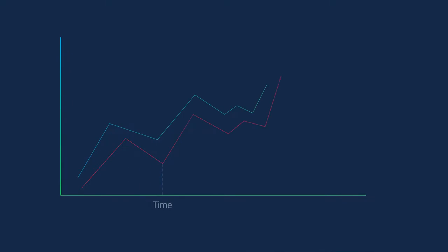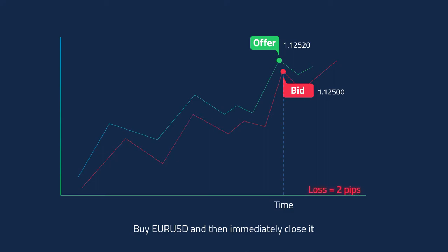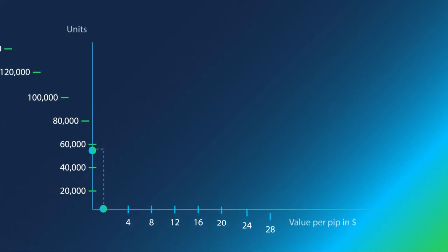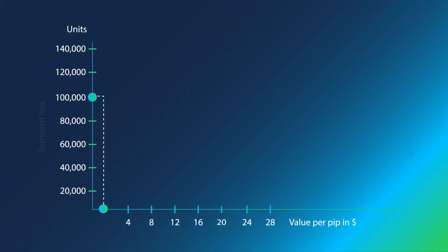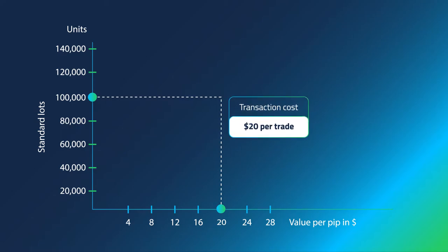In this example, if you were to buy EURUSD and then immediately close it, it would result in a loss of 2 pips. So, if you're trading standard lots, the value per pip is $20, so your transaction cost would be $20 to open this trade.